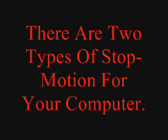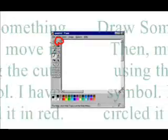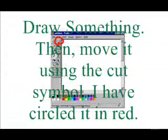There are two types of stop-motion for your computer. Number one is Microsoft Paint. Now go to Microsoft Paint and draw something,